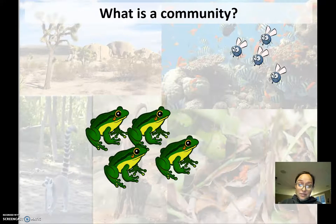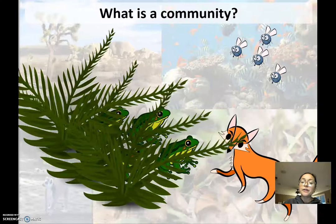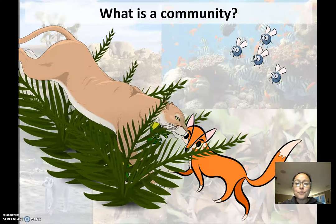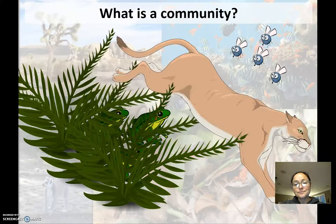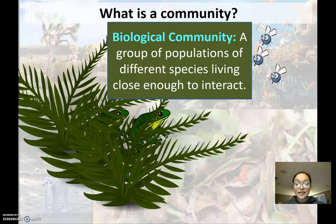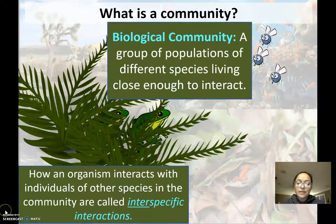It's more than just these two populations. You also have the plants that the frogs could live in to camouflage and hide from their own predators. So here you have dynamics within a community — predators, prey, shelter, like using plants or maybe you're a bird living in trees. When we look at how different populations interact, we call this a biological community — a group of different populations of different species living close enough together to interact. How an organism interacts with individuals of other species in a community are called inter-specific interactions, because that means different species.